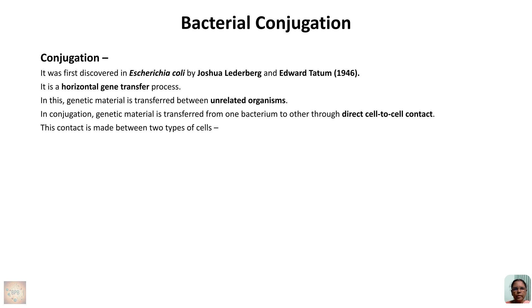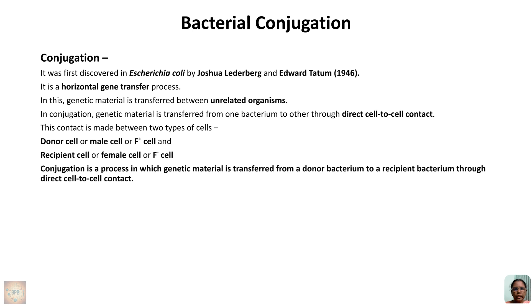In conjugation, genetic material is transferred from one bacterium to another through direct cell-to-cell contact. This contact is made between two types of cells: the male cell or F+ (fertile/donor) cell, and the female cell or F- (recipient) cell. So conjugation is a process in which genetic material is transferred from a donor bacterium to a recipient bacterium through direct cell-to-cell contact.